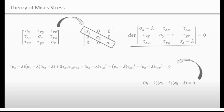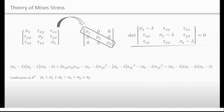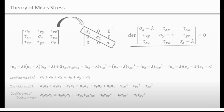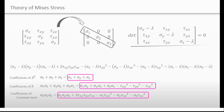We can combine these equations. If you compare the coefficients of lambda-squared, you get one equation, and you can get additional equations in the same way. These functions are all invariant — meaning their values do not depend on coordinate systems.